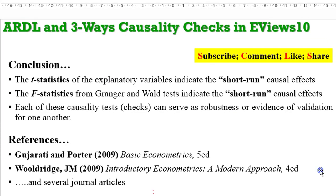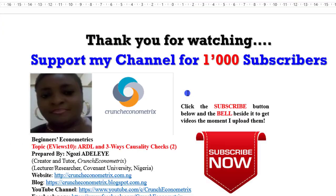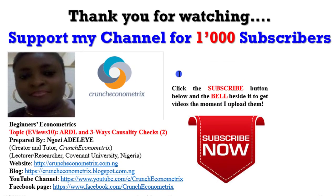In conclusion, the T-statistics and F-statistics will always indicate short-run causal effects among the variables, and each test can serve as a robustness check for the other. If you need more references on how to run causality checks, consult the recommended textbooks and source other journals. Please stay with me in my next video where I show you how to run the third check and also perform some diagnostics. If you have not subscribed to my channel, please do so and let me have your feedback. Thank you.